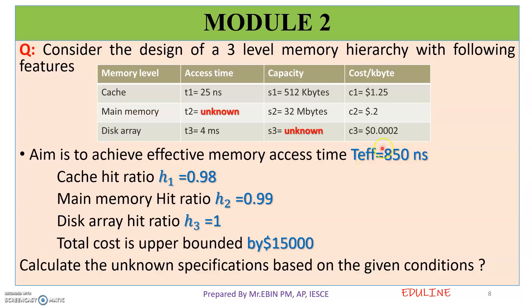The total cost is upper bounded — maximum cost is 15,000. The unknown values are the main memory access time, disk array capacity. We set up the total cost equation: C1×S1 + C2×S2 + C3×S3 ≤ 15,000.